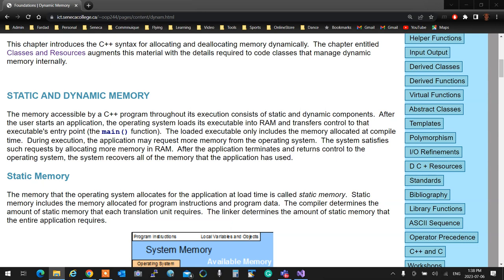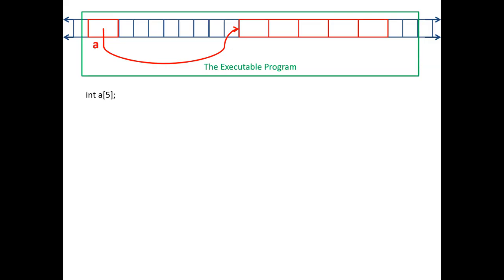We started with dynamic memory allocation as a review. When we do regular programming, statically allocated memory — also called automatic variables — gets created and destroyed automatically. This array here is statically allocated, meaning both the array body and the pointer pointing to it are inside your executable. When the executable dies, everything goes with it. You don't need to worry about anything — it's automatic and doesn't create bugs or leaks.